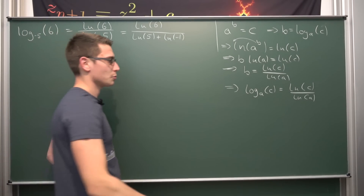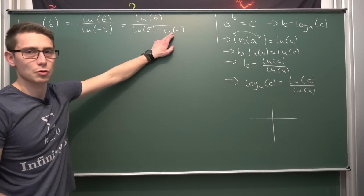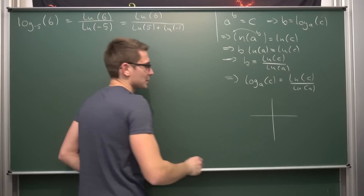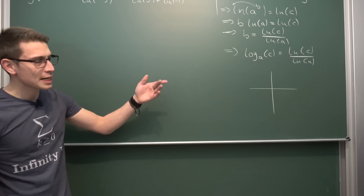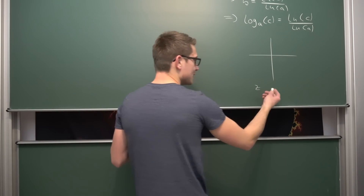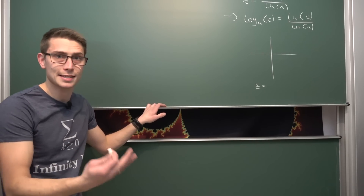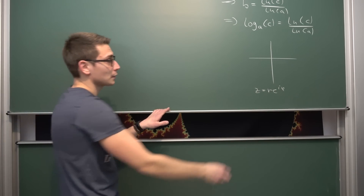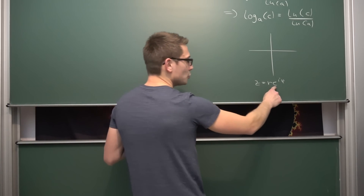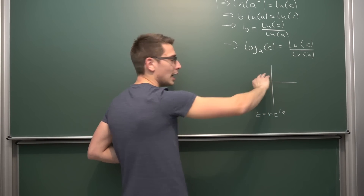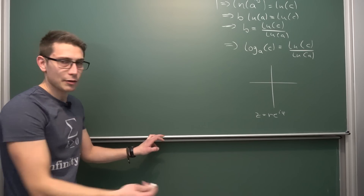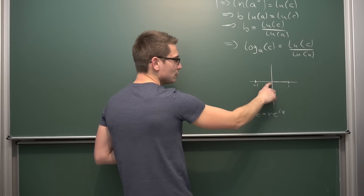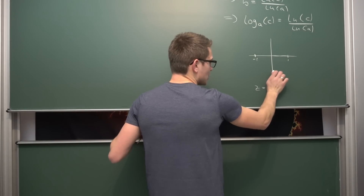Let's take a look at the complex plane. For a random arbitrary complex number z, you can write it as a plus ib in rectangular form, or in Euler form as r times e to the i·φ, where r is the magnitude and φ is the angle enclosed between the real line and our complex number. If we look at negative 1, it has a magnitude of 1, so z reduces to e to the i·φ. We rotate our vector to negative 1 by rotating pi to the left, meaning negative 1 equals e to the i·π.